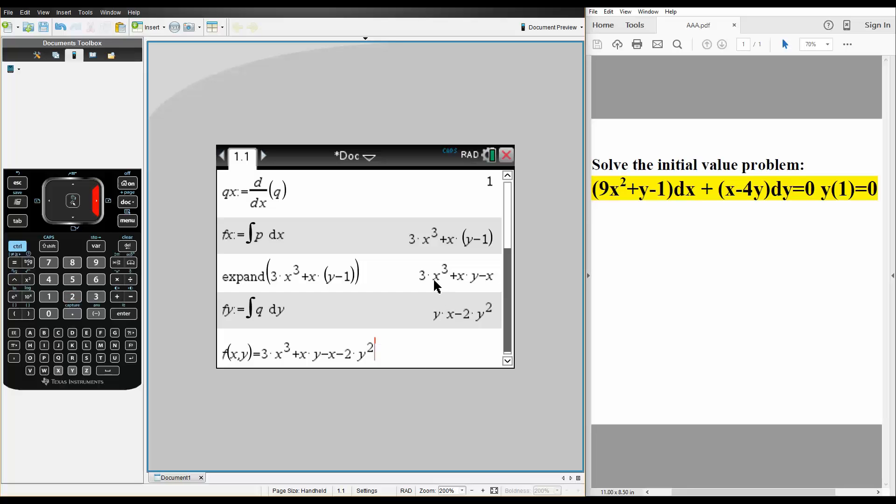Because we're writing this, we're writing 3x³ + xy - x - 2y². We're not including y times x. Since we already wrote xy, we're only writing the unique terms.